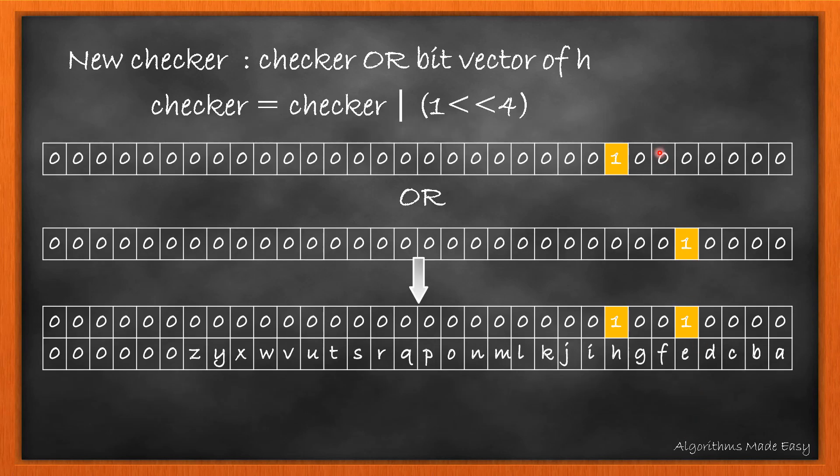As we can see, the OR operation of the checker and the bit vector 'e', we have 1s at the position indicating the characters 'h' and 'e'.